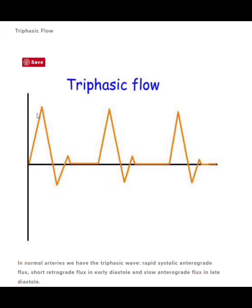Every normal triphasic waveform will have a rapid sharp upstroke. This is caused by each cardiac contraction and represents early systole. Then we have a rapid downslope or rapid deceleration slope, which tells you where the blood flow is going and indicates the closure of the aortic valve. You would see a diacrotic notch in this area, which indicates that aortic valve closure.